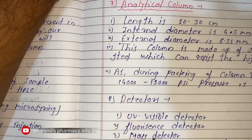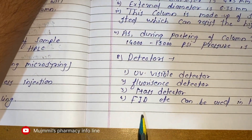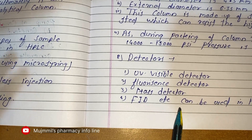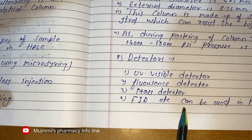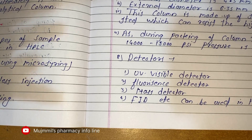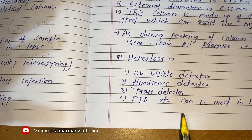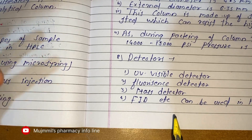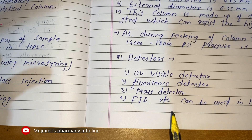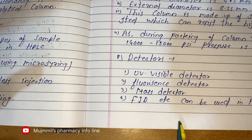Detectors used in HPLC include UV-visible detectors, fluorescence detectors, mass detectors, and flame ionization detectors. To summarize: in your exam, explain HPLC with an introduction, draw the HPLC instrumentation diagram, and explain all parts one by one with well-labeled diagrams — this will get you good marks. Thank you for watching; we will meet in the next lecture.